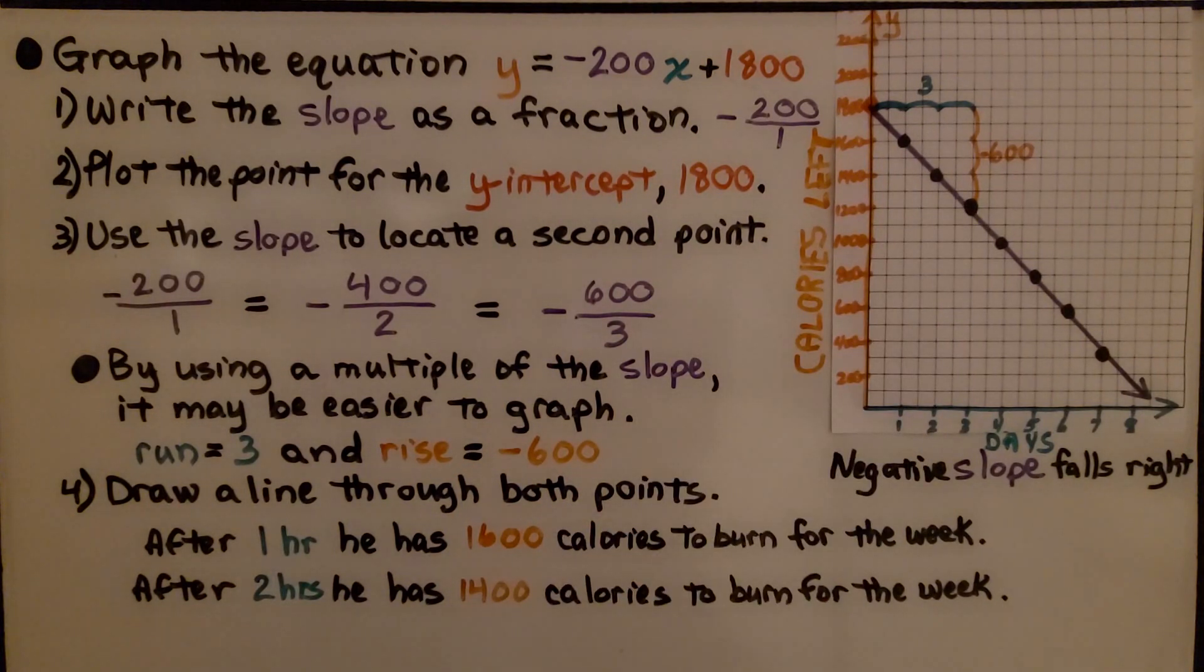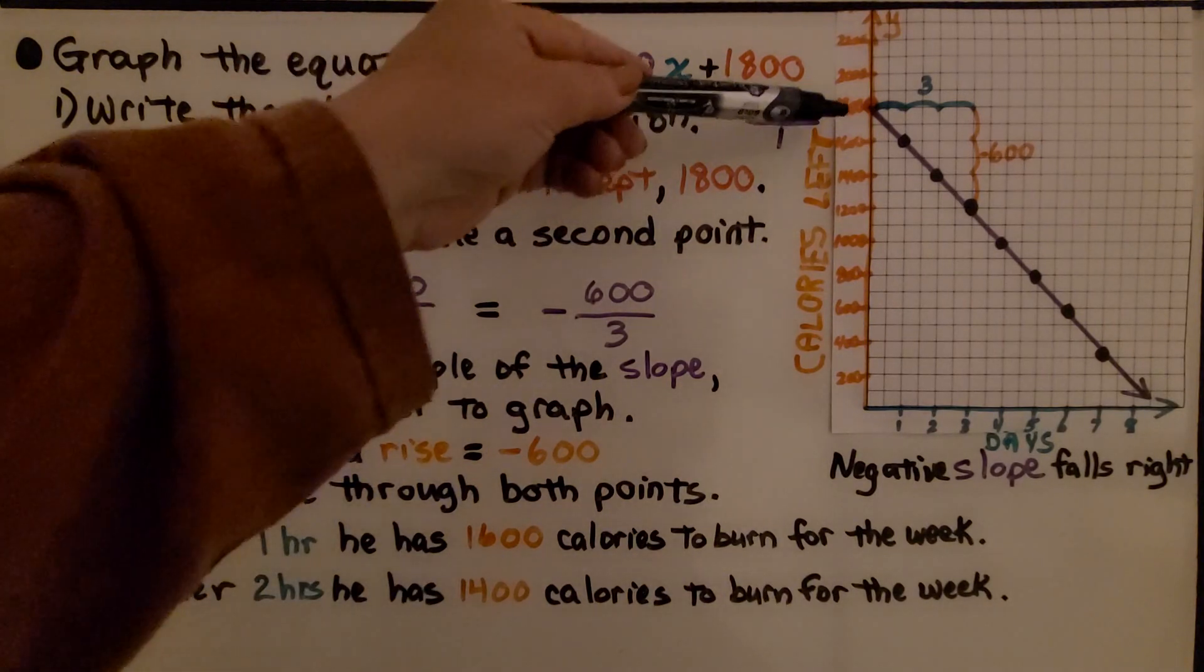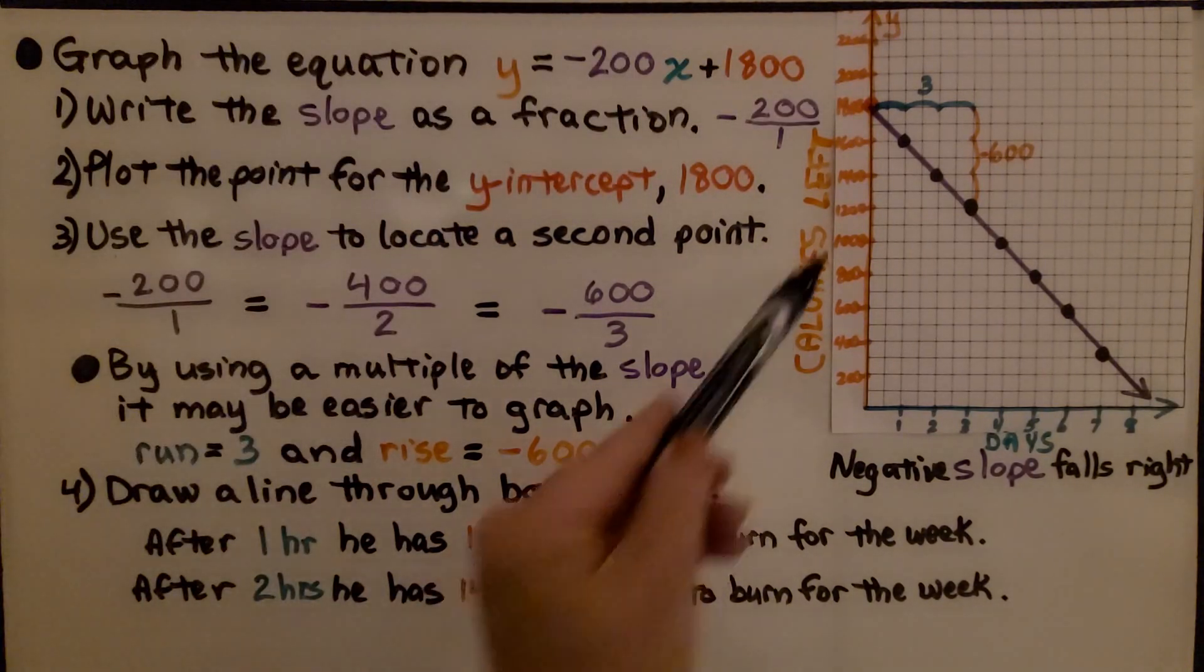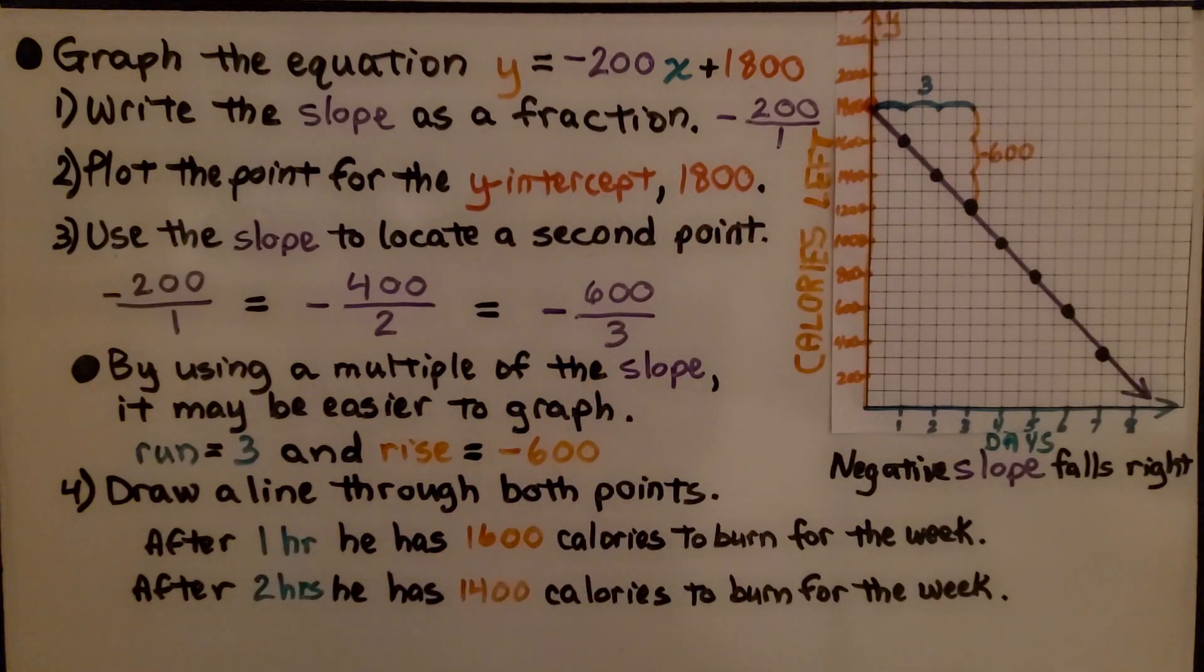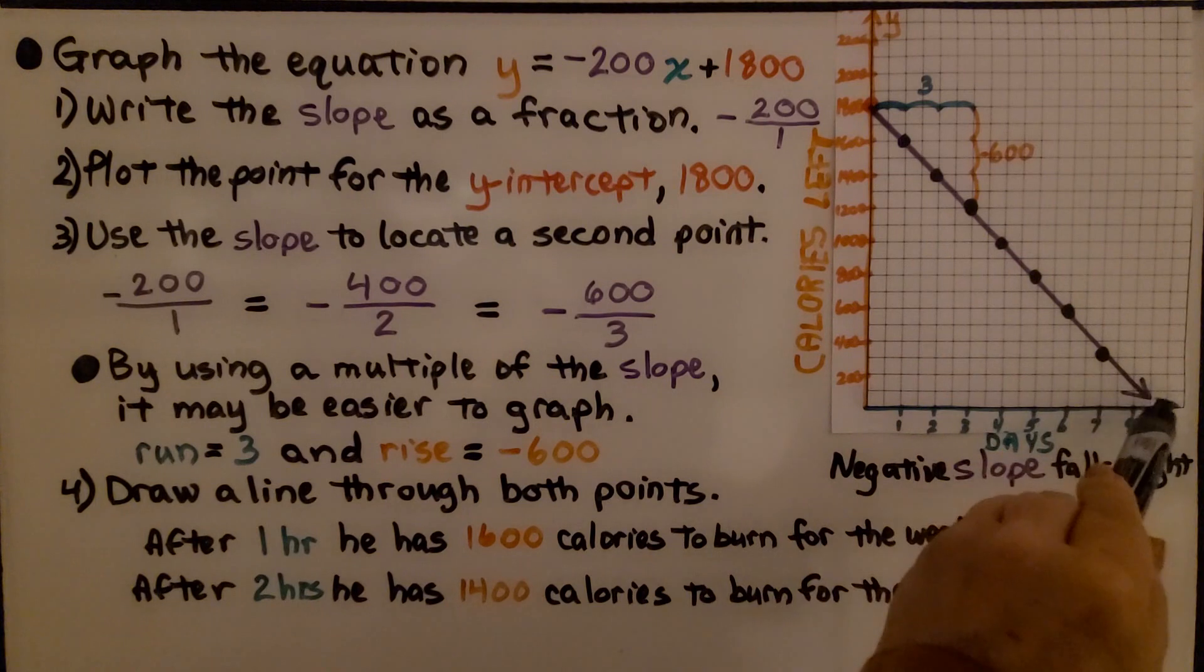We can see after 1 hour he has 1,600 calories to burn for the week. And after 2 hours, that would be right here, a run of 2, he has 1,400 calories to burn for the week. And we can see how many calories he's got to burn if we keep coming down.